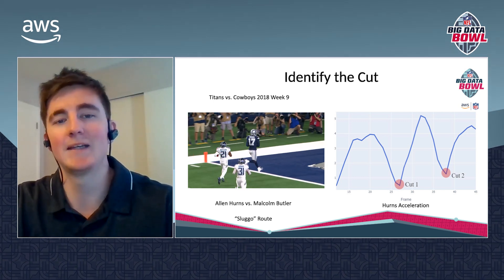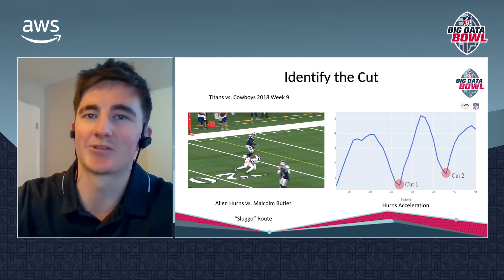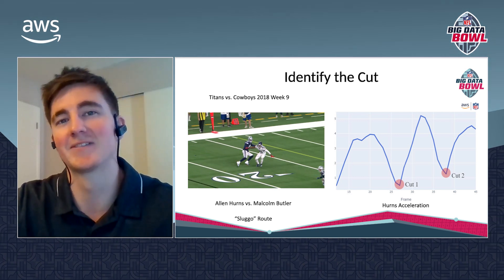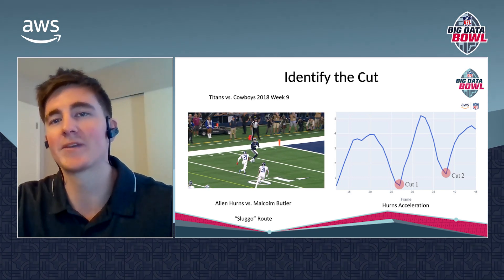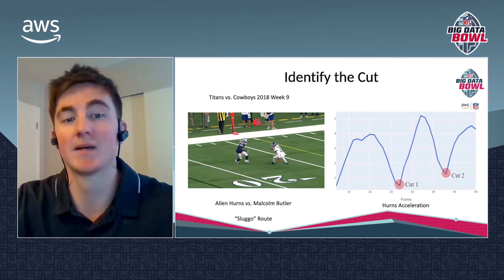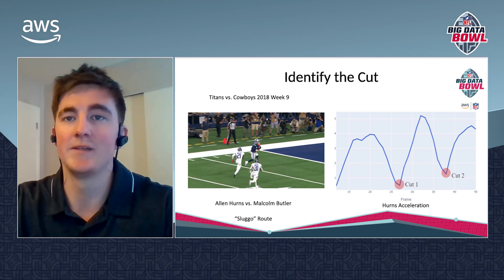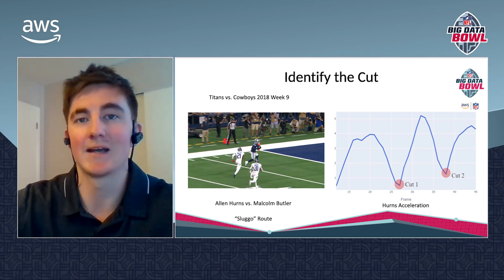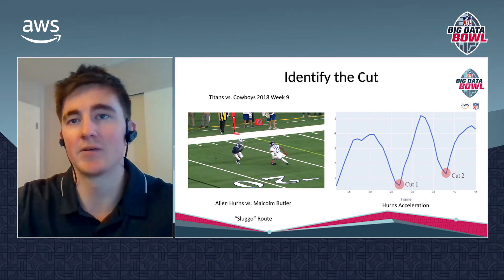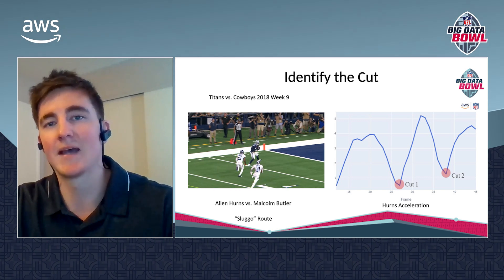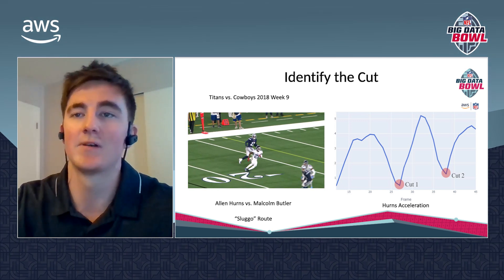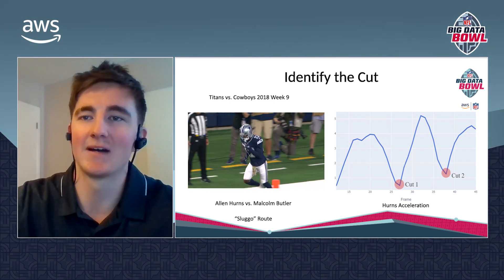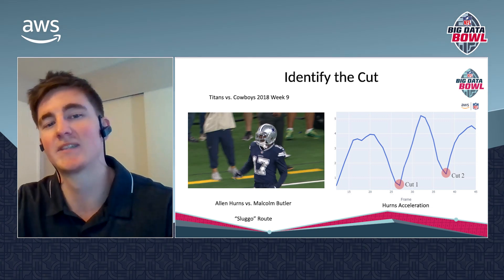For any of this to work, I need to be able to identify when the receiver makes their cut in the tracking data. It's definitely not an easy task when you're staring at millions and millions of rows of data, but when you actually plot the receiver's acceleration on the play the picture becomes a lot clearer. If you look at the chart on the right you can see Hearns's acceleration — the two minimum points are the exact moments when he made each cut. I was able to detect this by creating a function that identifies acceleration percent change, which vastly improved route detail and enabled identification of new routes such as double moves.